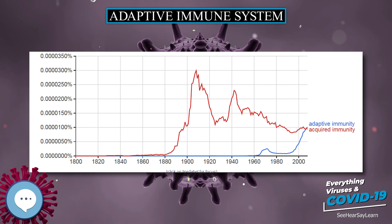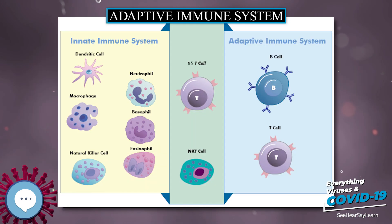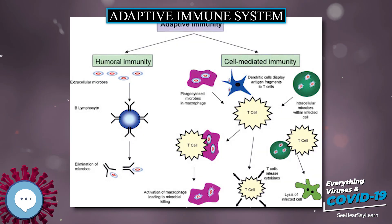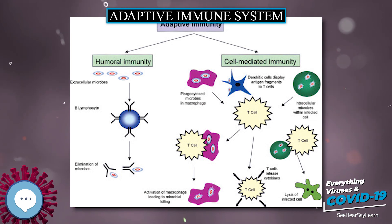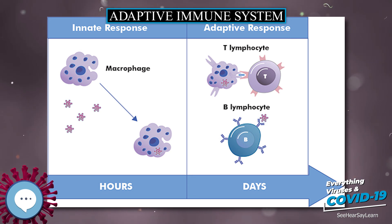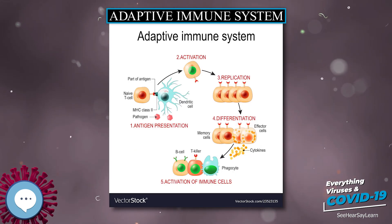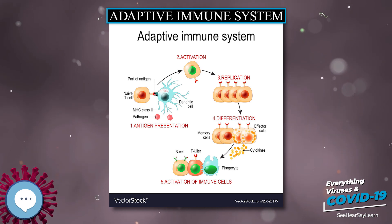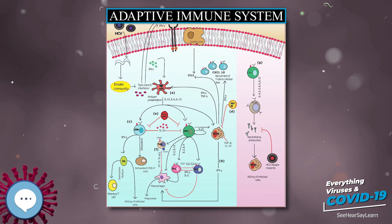Immunity can be acquired either actively or passively. Immunity is acquired actively when a person is exposed to foreign substances and the immune system responds. Passive immunity is when antibodies are transferred from one host to another. Both actively acquired and passively acquired immunity can be obtained by natural or artificial means.